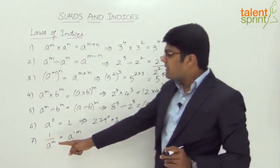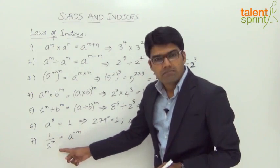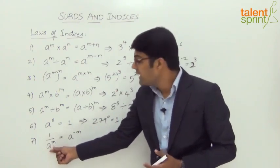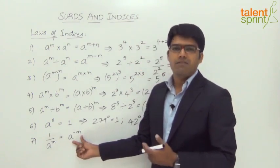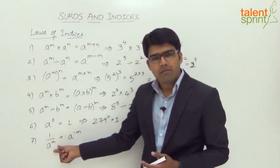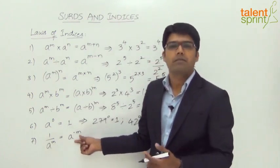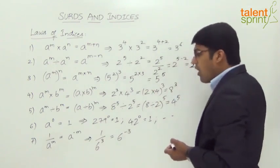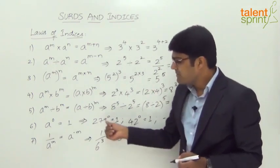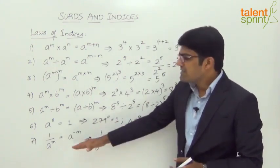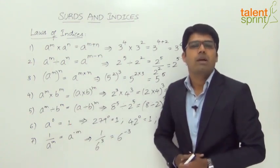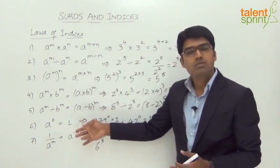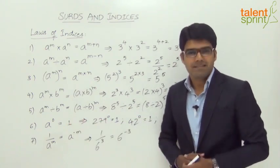The last rule, number 7: 1 divided by a to the power of m equals a raised to the power of minus m. When a power in the denominator is moved to the numerator, it becomes negative. For example, 1 by 6 to the power of 3 can be written as 6 to the power of minus 3, and conversely, 6 to the power of minus 3 can be expressed as 1 by 6 to the power of 3. Rules 6 and 7 must be used intelligently to arrive at the required answer in a simple manner.